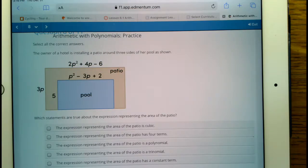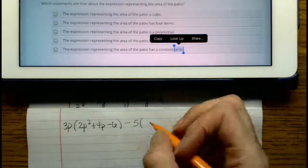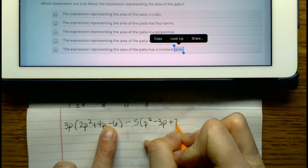And what happens is if we want to find the area of the patio, then what we have to do is subtract out the area of the pool. And the pool is going to be minus 5 times p squared minus 3p plus 2.